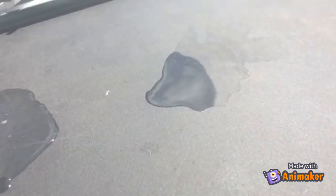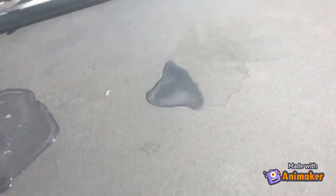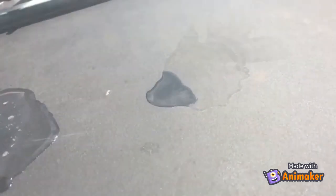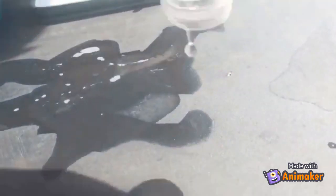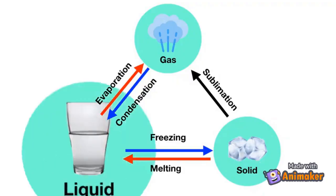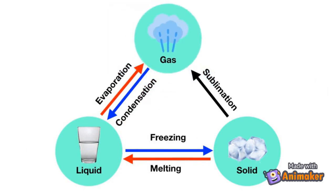Here's another example. If you pour water on a dark surface on a hot day, you can watch it seem to disappear really quickly. That's because the liquid water is turning into water gas, or vapor, and vanishing into the air. What is it called when a liquid turns into a gas? We call that evaporation.